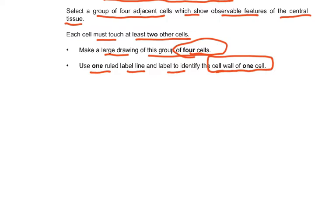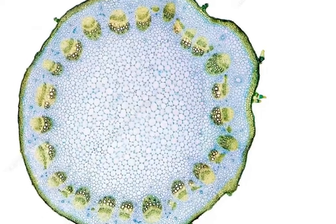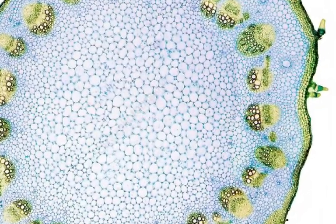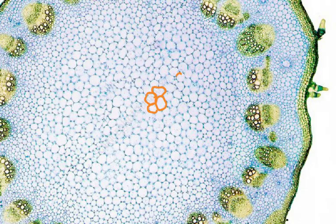Now if you look at this diagram, they want you to do four cells from the center. I'm just magnifying it a bit — I know you can't do this in the exam, but look at what we have to draw. We have to draw four cells: this is one, two, three, and four. You could do any four — I'm not saying you can only do this one. You will be able to see it on high-power magnification. Choose four cells from anywhere in the central area of the stem.